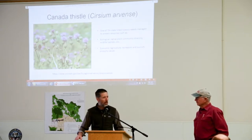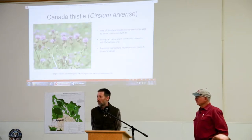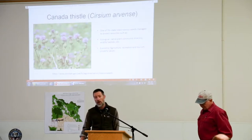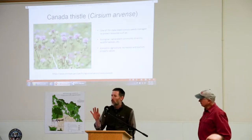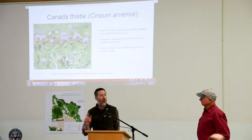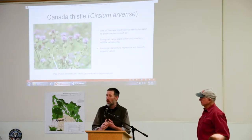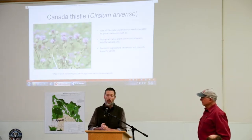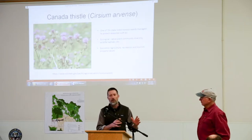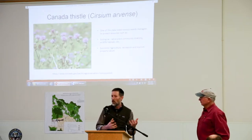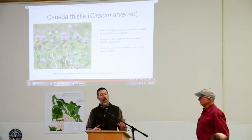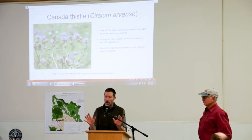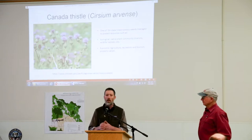There's always a subset of calls where people ask about thistle in general — 'How do I control thistle?' When we get that question, it's really important to dig deeper and find out which thistle the landowner is trying to manage. In addition to Canada thistle, we have four other noxious thistles: musk thistle, plumeless thistle, bull thistle, and scotch thistle. Those are all biennial thistles with a different life cycle, so we manage them differently and time the management differently than we do Canada thistle.